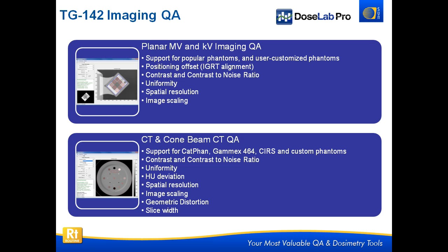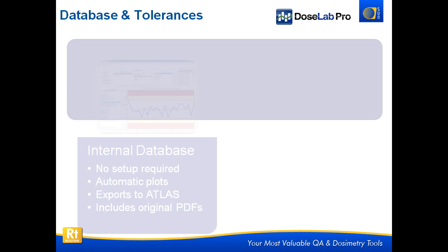We do CT and Conebeam CT QA. We support Catphan, GAMEX 464, CIRS, and custom phantoms — if your phantom isn't on the list, you can manually add it. We calculate contrast and CNR, uniformity, HU deviation, spatial resolution, image scaling, geometric distortion, and slice width. All of this is fully automatic: you just point to the directory that has your DICOM files of your CT scan, click OK, and everything else happens behind the scenes.